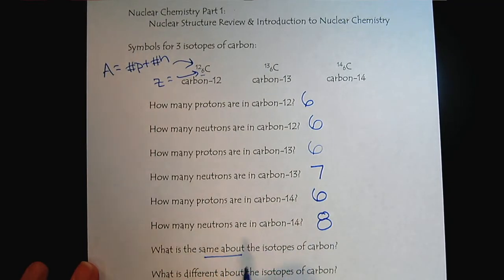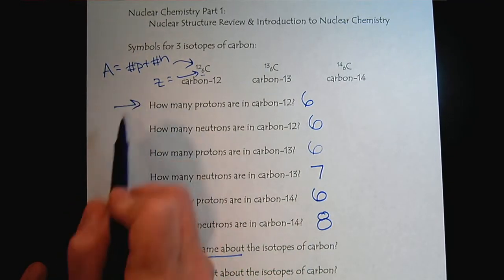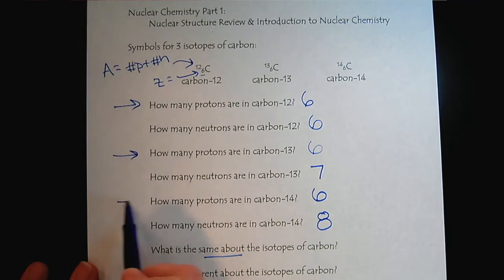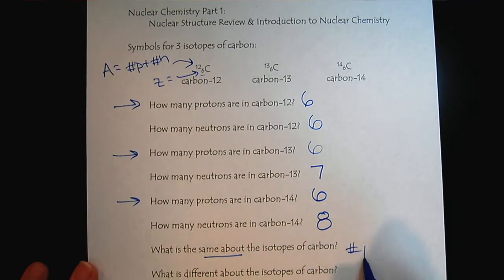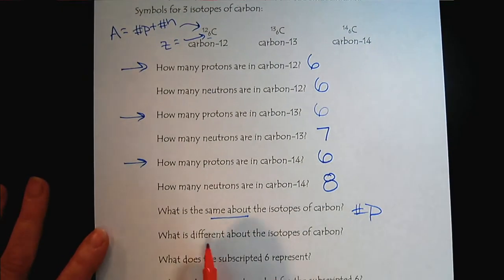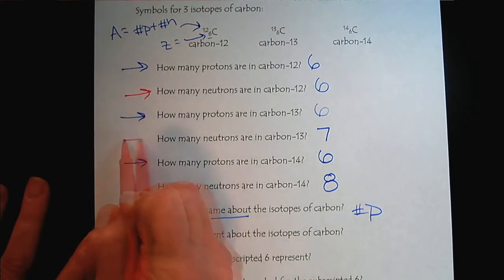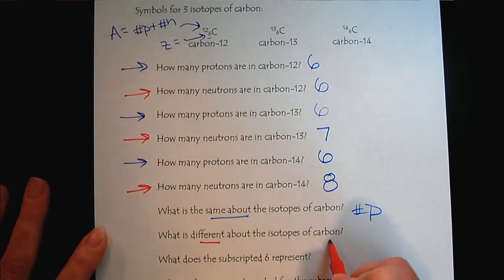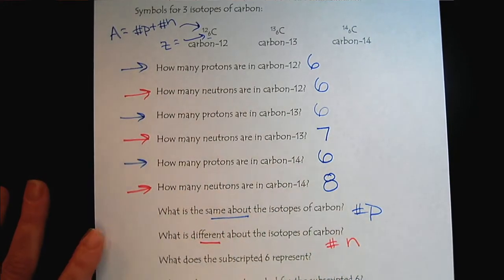So what's the same about all these isotopes? It's definitely the number of protons. What's different about each of these isotopes? The number of neutrons.